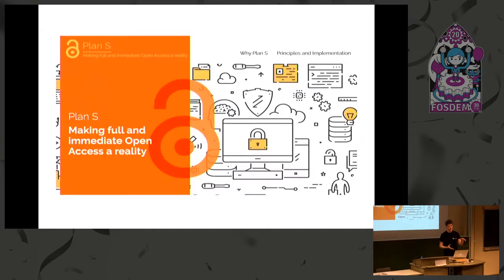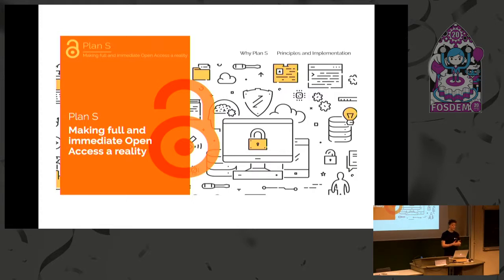One related problem is the embargo problem: many publishers who publish today have 12 months or up to 24 months of embargo. There's a big initiative driven by scientific funders called Plan S, which really wants to bring that embargo to zero for the work they fund. That's a really encouraging trend. Let's be optimistic that in the next five years, from all the funders in Plan S, we will see a zero embargo.